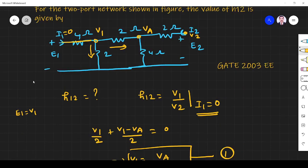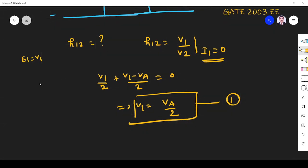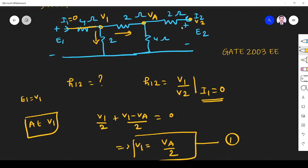Next I have to find the node equation for this node. At node va, what is the nodal equation? First thing is va. This is va, this is v2.